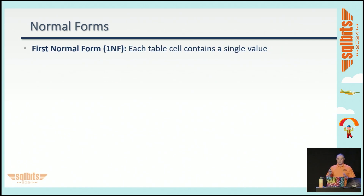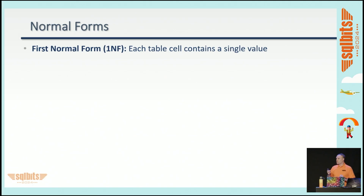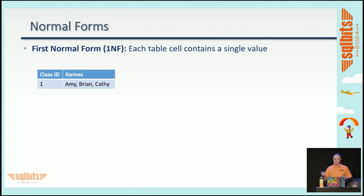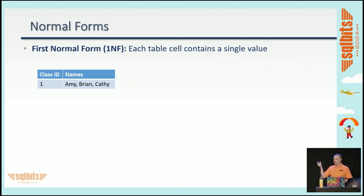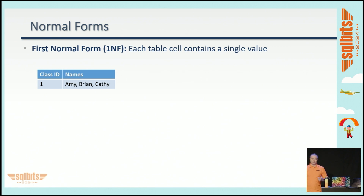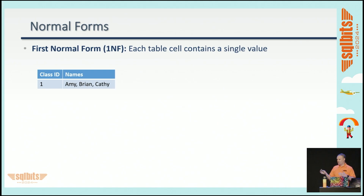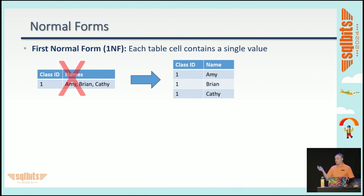Let's go through some relational normal forms quickly. The first normal form means each table cell contains a single value. If I have a table with an ID column and multiple names all in one row, that violates the first normal form — it would be really hard to select just one name. You'd have to use text functions and still get the whole row. The solution is to split it into multiple rows with one value per cell — that's the first normal form.